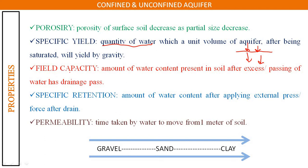Field capacity means the amount of water present in soil after excess water has passed through it. For example, if we pass water through a soil layer, after the excess water drains out, the water that remains stored in that layer is known as field capacity.